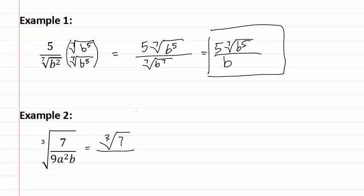With the cubed root of seven in the numerator and the cubed root, remember change our numbers to their prime factorization. So three squared, a squared and b.